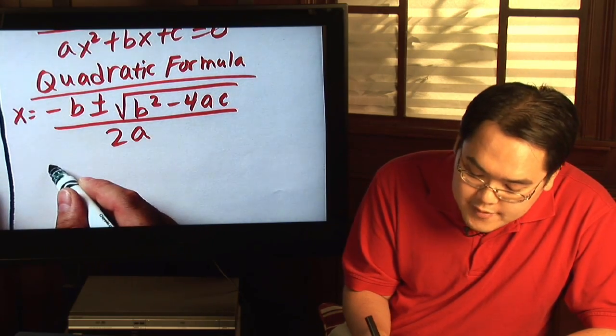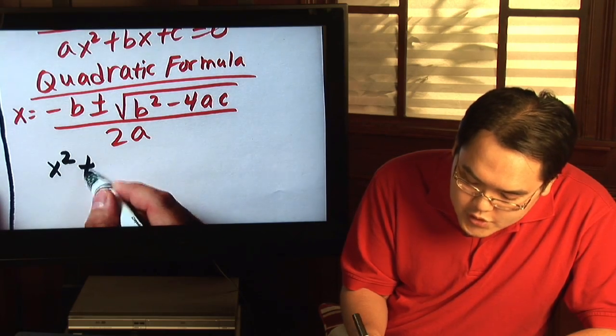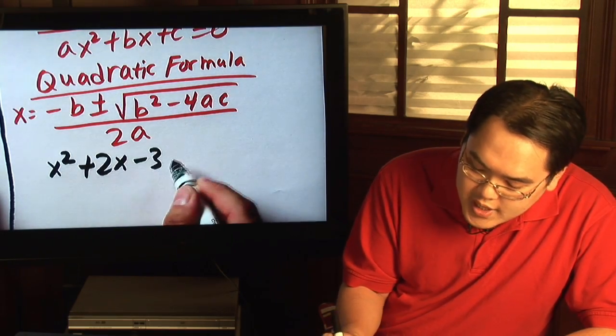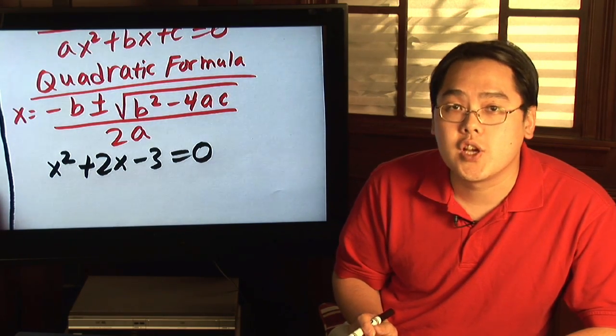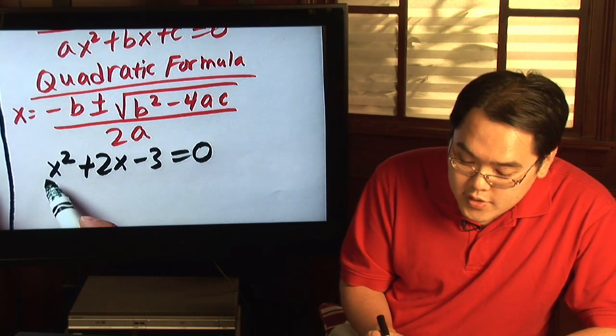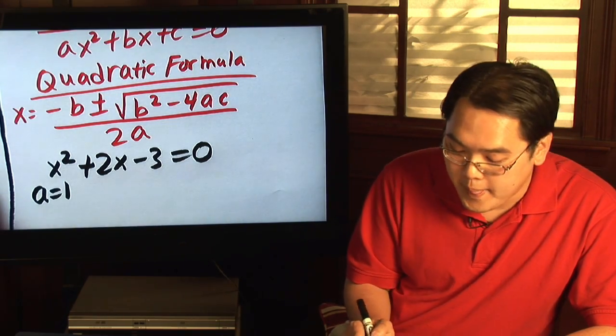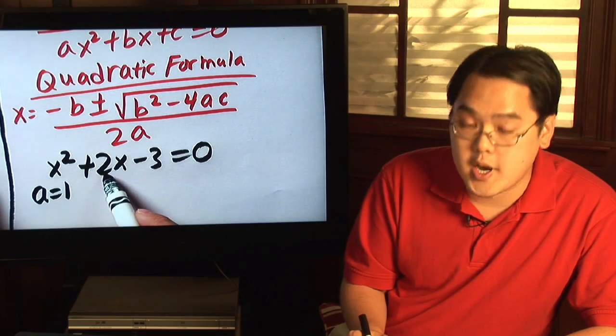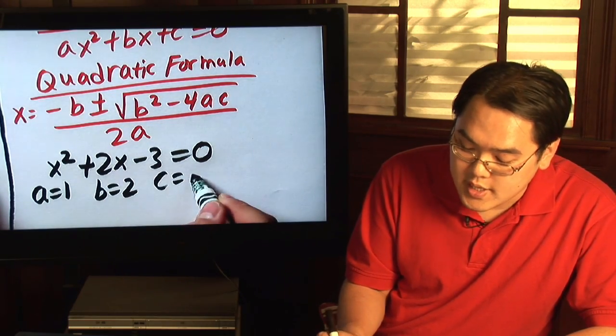Suppose you have x squared plus 2x minus 3 is equal to 0. As long as you identify your a's, b's, and c's, you'll be good to go. Because there's no number in front of the x squared, you can always assume that a is equal to 1. b, the number next to the x, is positive 2. And c is negative 3.